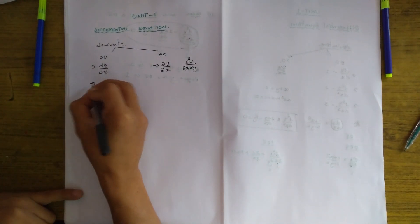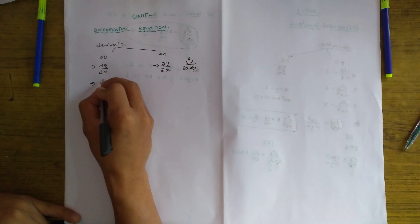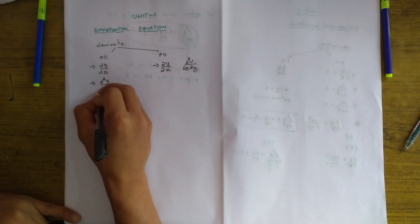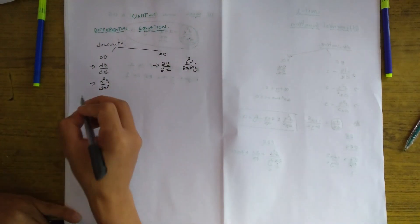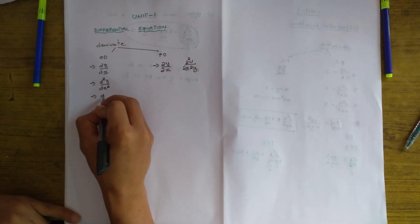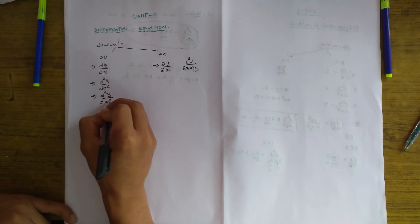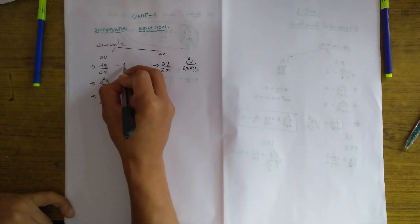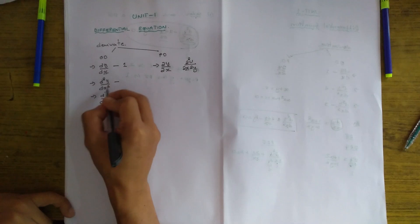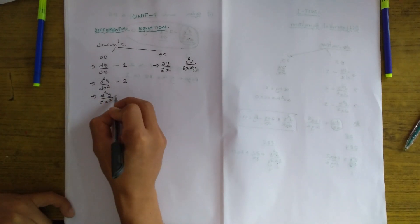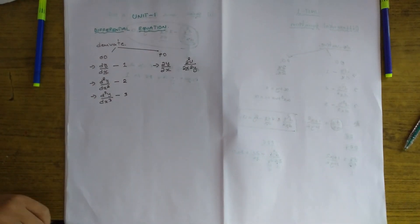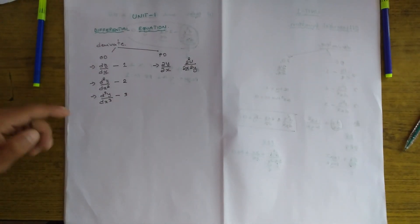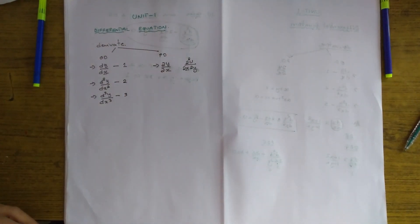If I differentiate this function with respect to x a second time, I get d²y/dx², and if I differentiate it one more time I get d³y/dx³. So the order of dy/dx is 1, the order of d²y/dx² is 2, and the order of d³y/dx³ is 3. The more we differentiate the function, the higher the order becomes.